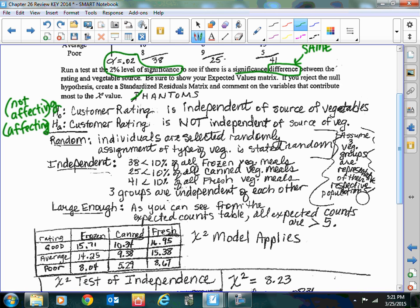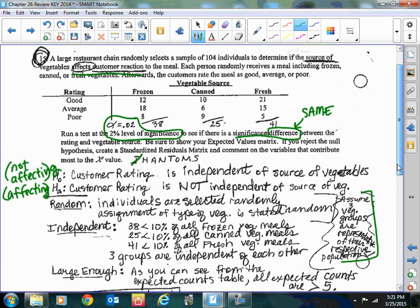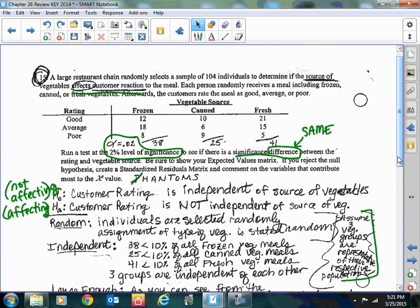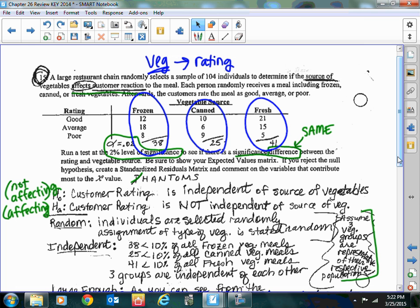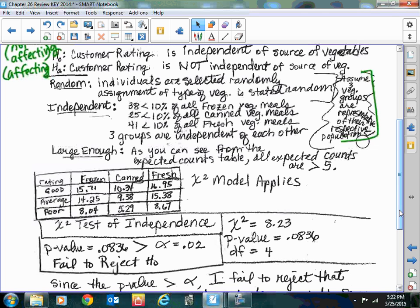Random: I would say that individuals are selected randomly. Assignment to the type of vegetable is stated random. And so I'm saying that these three vegetable groups are representative of their respective populations. So the question also is, what groups are you going with? Are your groups going to be good, average, or poor? Or are your groups frozen, canned, and fresh? And I feel that they've got to be this direction because you're going with the idea that the vegetable source is indicating the rating. So the vegetable source is the driver. Therefore, those would be my groups that I would define.